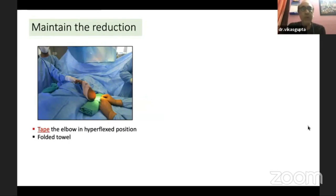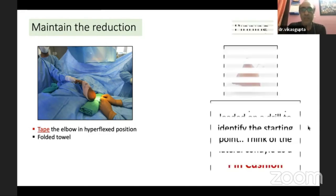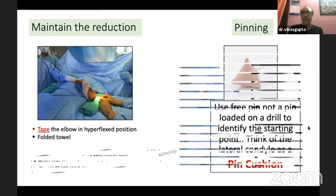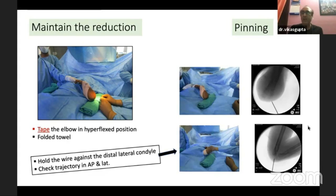Once confirmed, maintain the reduction by taping the elbow in a hyperflexed position — this makes your life easy and you don't need an assistant. Keep a folded towel under the elbow. One key tip: don't jump into drilling first. Imagine the lateral condyle like a pin cushion. Use a free pin, not one loaded on a drill, and hold the wire against the distal lateral condyle to check the trajectory in both AP and lateral views before you start drilling, so you don't make multiple passes. Once trajectory is confirmed, advance with the drill and make sure you engage both the proximal and distal cortex.